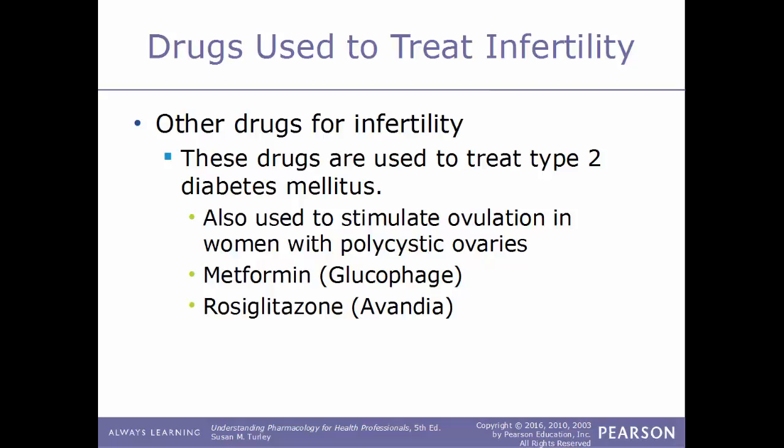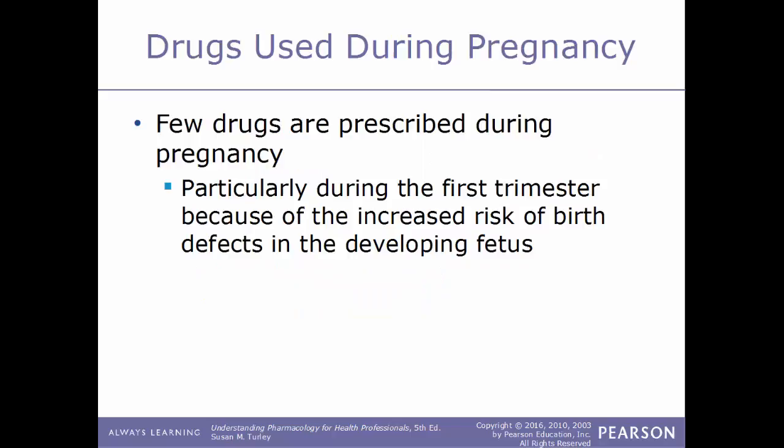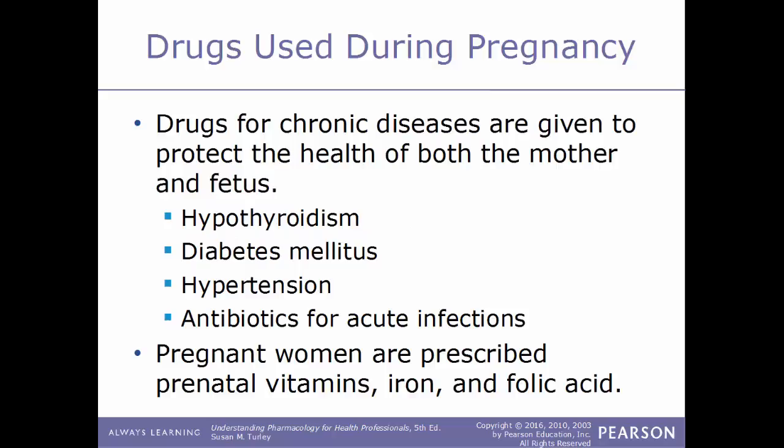Now we'll move on to drugs that are used during pregnancy. Very few drugs are prescribed during pregnancy, particularly during the first trimester, because of the increased risk of birth defects in the developing fetus. Drugs for chronic diseases such as hypothyroidism, diabetes mellitus, and hypertension are given to protect the health of both the mother and the fetus, along with antibiotics for acute infections. Pregnant women are also prescribed prenatal vitamins, iron, and folic acid.